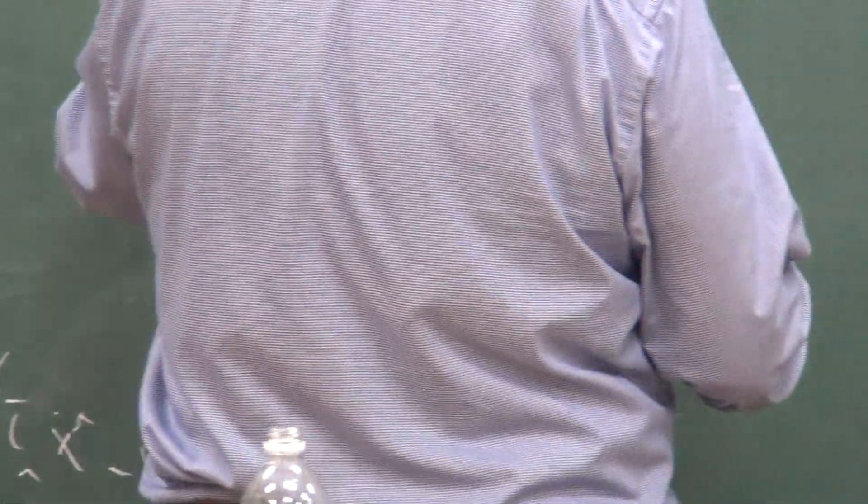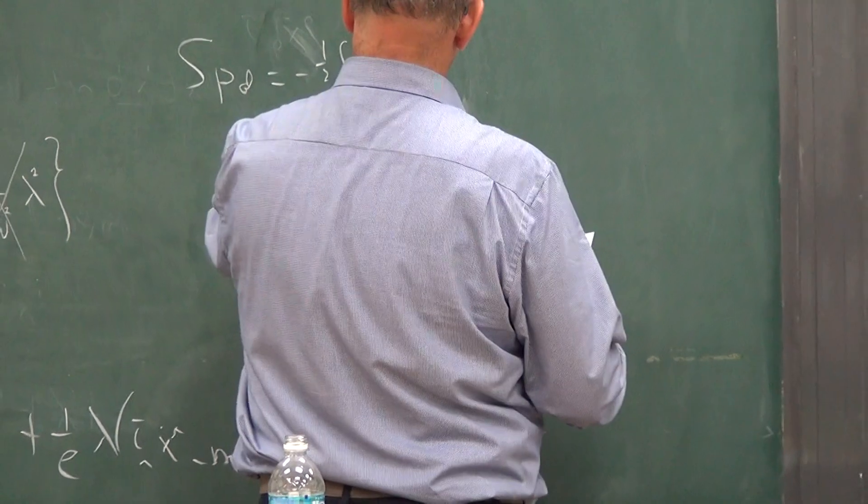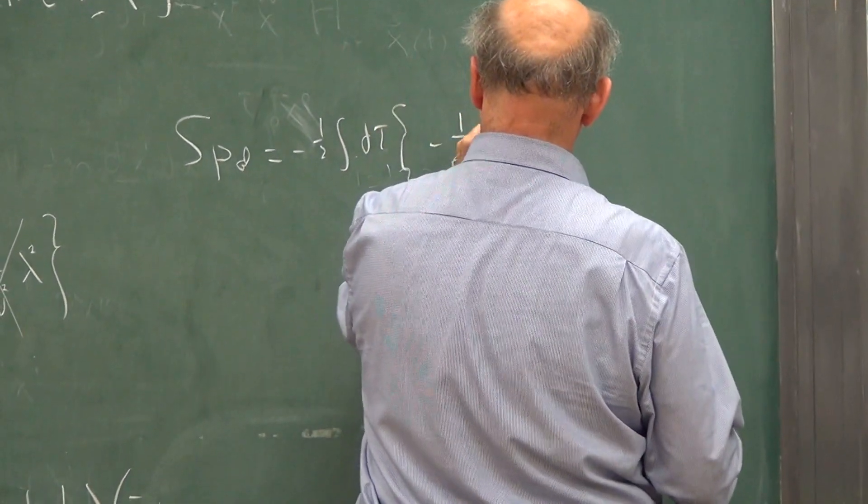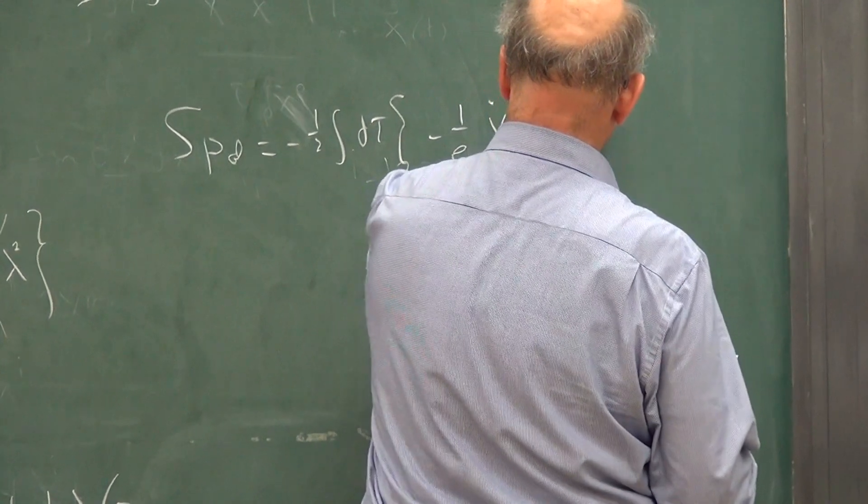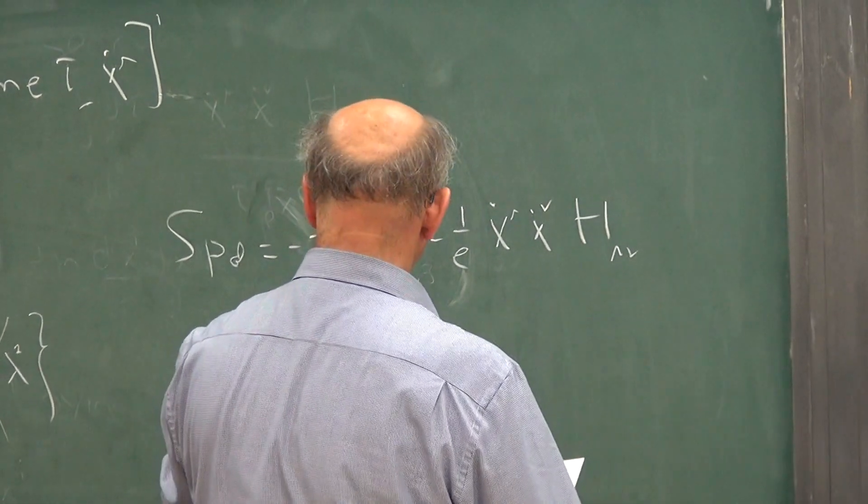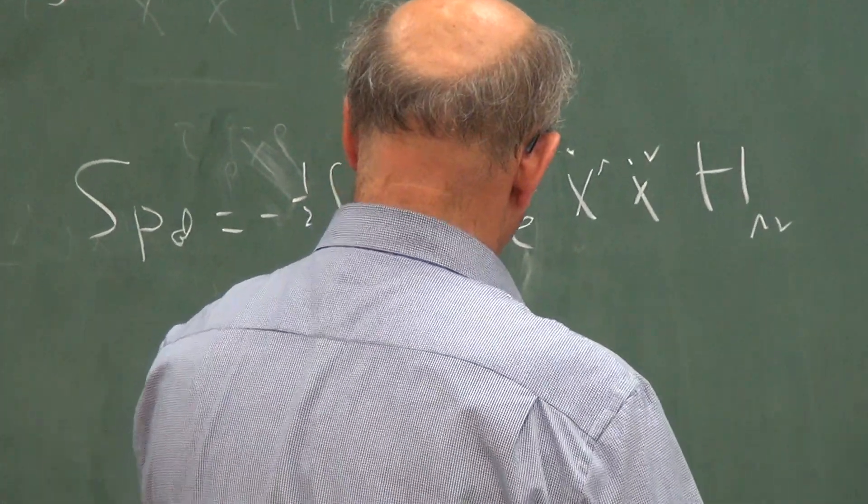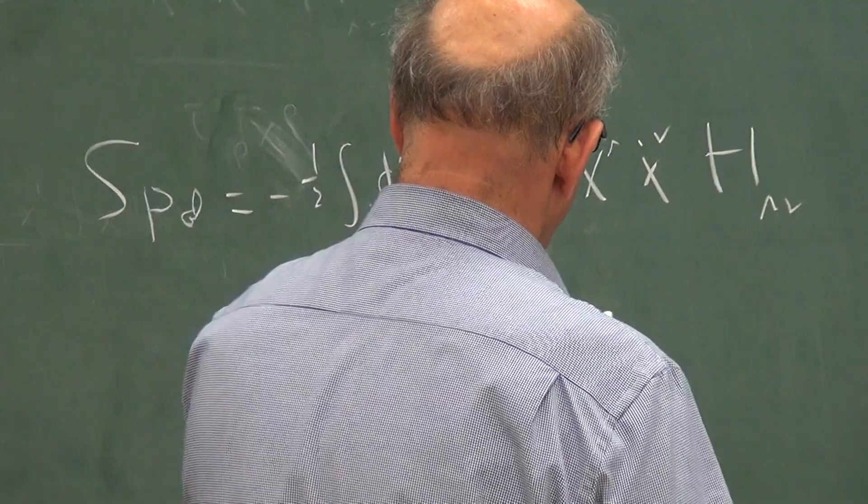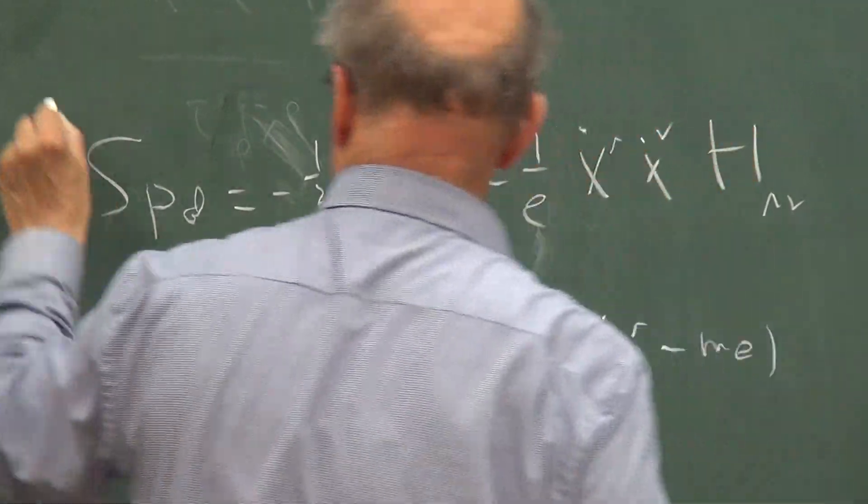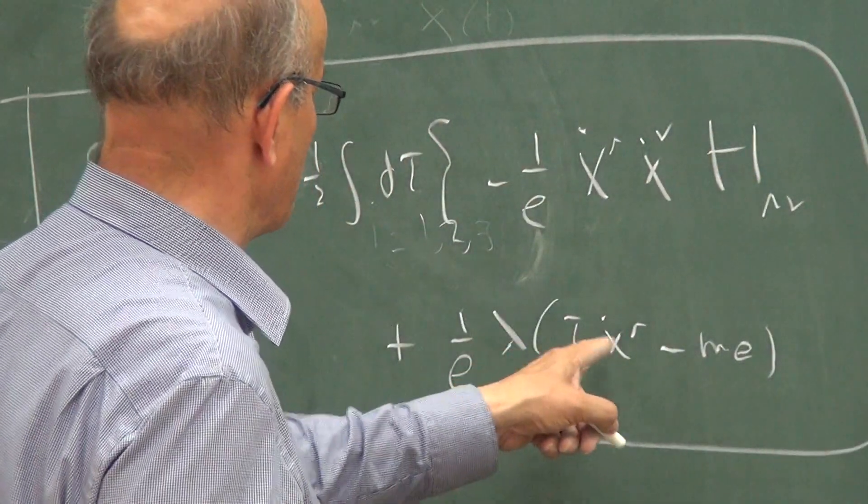And I'll show that tomorrow, that is minus 1 over e times h dot mu h nu, the boost invariant metric in the space directions, plus 1 single Lagrangian multiplier term, equal to e lambda times tau mu h dot mu minus n. I'll show you tomorrow how to get exactly back to the non-relativistic action if you solve for the lambda and the e,